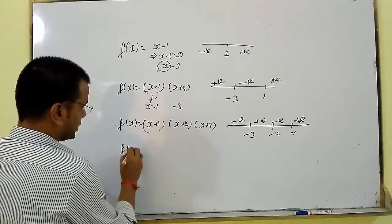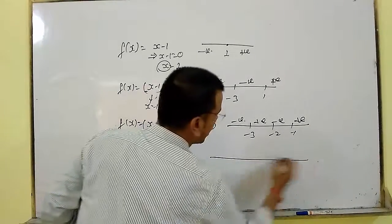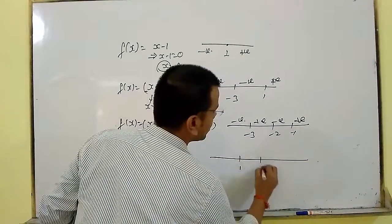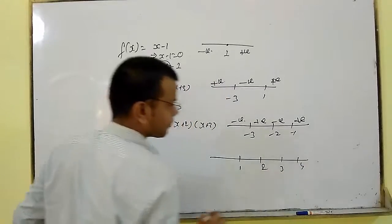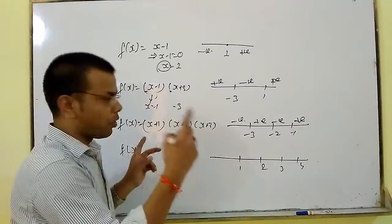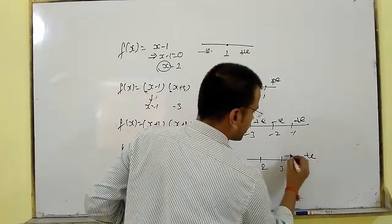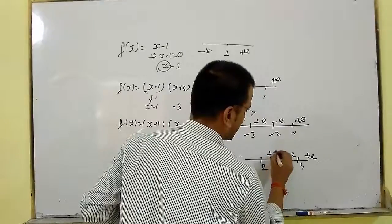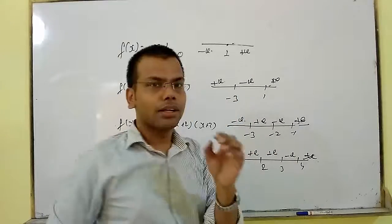For four roots, say if we have roots 1, 2, 3, 4, and the product of all x is positive, then the sign pattern becomes: positive, negative, positive, negative, positive.